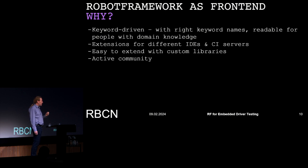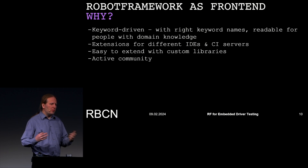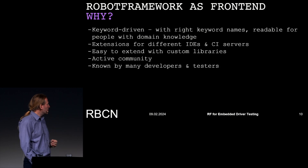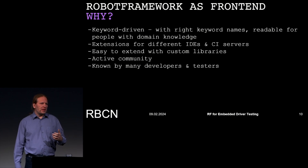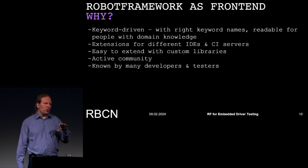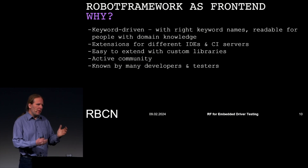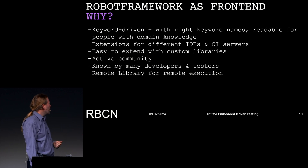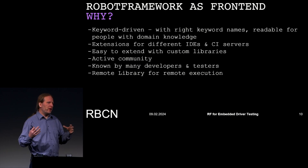One important factor was the active community. We needed people we could ask and a project that is actively developed. With commercial products you have to call support and there aren't many people who know the system. Robot Framework was already known by some people — maybe there are people in the company already doing automation and using Robot Framework for web testing. With IoT, we have embedded devices, cloud, and other things, so it fits this ecosystem nicely. The remote library was also excellent for our prototypes because we needed remote execution on the hardware and the interface was already in place.